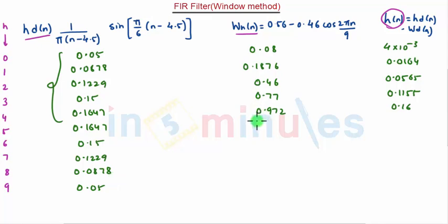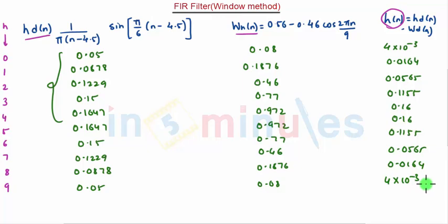Similarly, here it would be 0.972, 0.77, 0.46, 0.1876, and 0.08. And similarly, the results are also same, that is 0.16, 0.1155, 0.0565, 0.0164, and finally, the last value that is 4 into 10 raised to minus 3. This is the impulse response required.